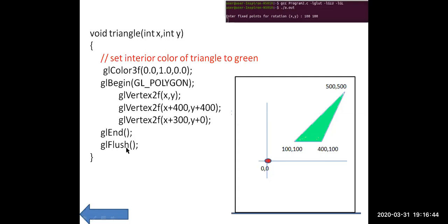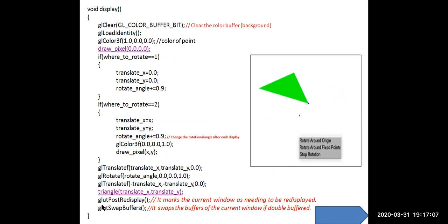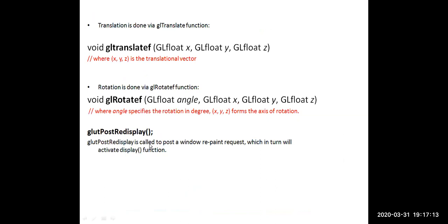At the end of the function, gl_flush is called. The color of the triangle drawn using the polygon primitive is set by calling gl_color with red, green, blue values. Green is set to 1, so the object color is green. glut_post_redisplay is called to post a window redraw, which in turn will activate the display function again continuously.